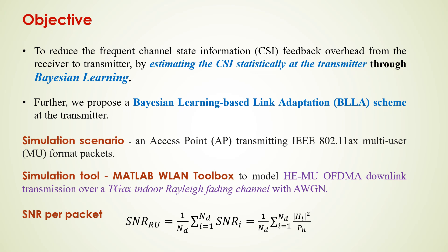The SNR per packet, or SNR over a resource unit consisting of ND subcarriers, is given by this equation, where ND is the number of subcarriers in the resource unit, |H_i|² is the channel gain of the i-th subcarrier, and P_NSC is the noise power.